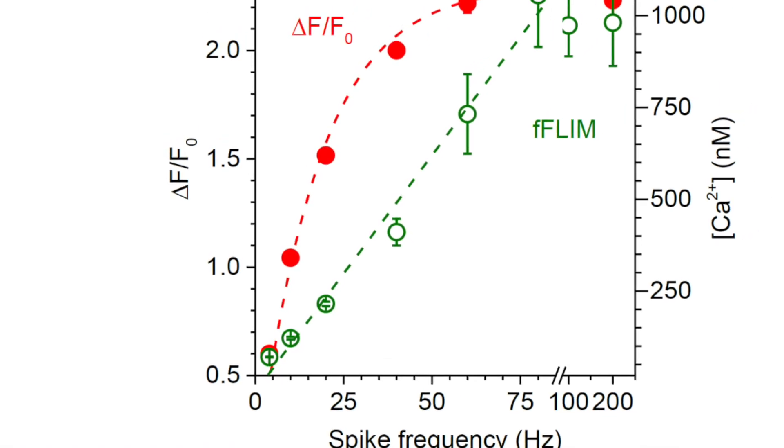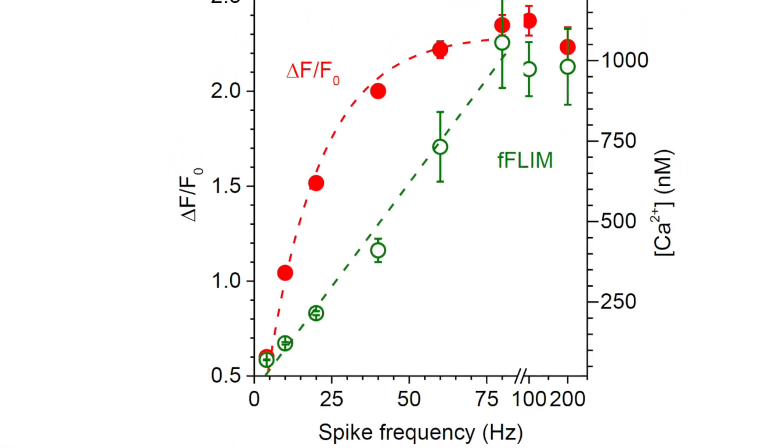Although FLIM is a slow technique because of the number of cycles required to collect enough photons for a measurement, we managed to measure some fast calcium dynamics in neurons with 10 millisecond temporal resolution. We compared the intensity measurement and the FLIM readout of the calcium signal elicited by a train of backpropagating action potentials. The FLIM readout proves advantageous for two reasons: first, it directly provides the calcium concentration values; and second, it relates linearly to the frequencies, unlike intensity measurements which rapidly saturate.